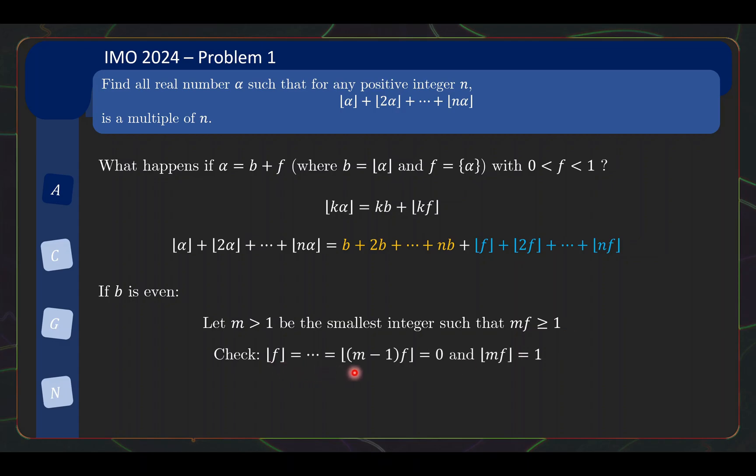The floor of mf, we need to check that it is equal to 1. And indeed, when it first crosses the threshold of 1, (m minus 1)f is still 0 point something. It cannot be that mf is 2 point something, because f is strictly less than 1. So the floor of mf, or rather mf, then must be 1 point something, so its floor will be 1. Okay, so this is just a small technical detail here to check that this is not equal to 2, or 3, or something larger, but equal to 1.